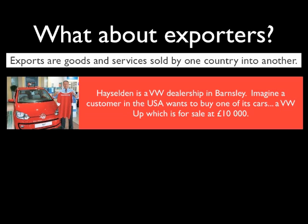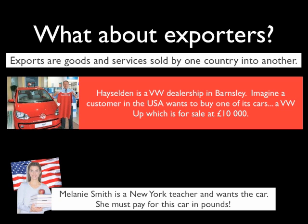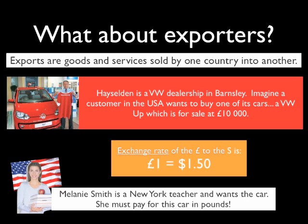There on screen is a VW Up, for sale at the dealership for £10,000, and the US customer wants to buy it. They cannot find the same car anywhere in the US — they must have this car. Melanie Smith is the New York teacher who wants to buy the car. She must pay the dealership in pounds — it's no good paying a UK business in dollars. So she needs to exchange her dollars for pounds, and this is where the exchange rate comes in. The exchange rate — let us assume it is £1 = $1.50 — so each pound Melanie buys is going to cost her $1.50.